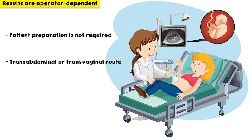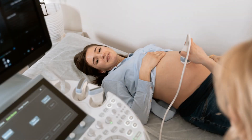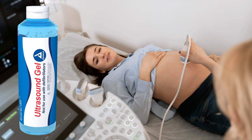Either transvaginal or transabdominal route can be used to visualize the fetus. The woman undergoing the procedure should remove clothes around the area where the probe is applied. A coupling gel is applied to the skin to reduce acoustic impedance from environmental air. The procedure usually takes a few minutes, and no anesthesia is required.